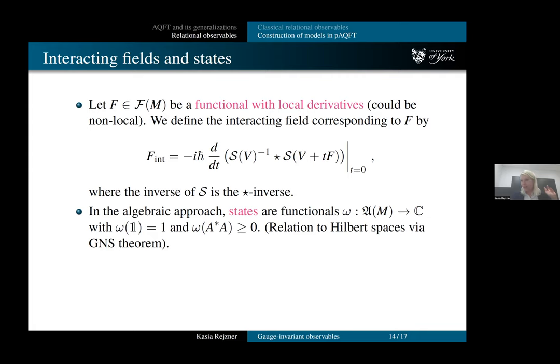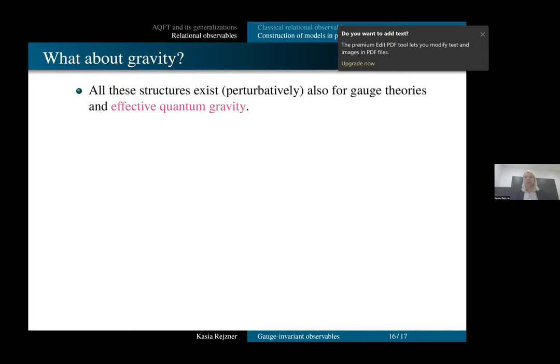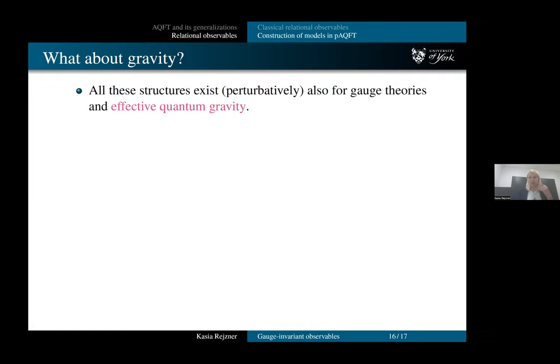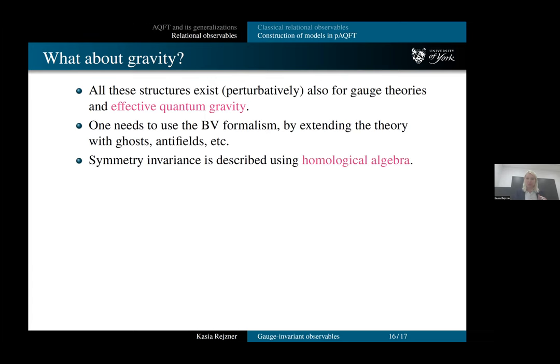So we have now our quantum algebra with the non-commutative product we introduce. And the state is a map from that to complex numbers. And then if we want to go to Hilbert spaces that everybody likes, we use the GNS theorem. So just to wrap up. So this is the whole sort of framework that works for scalar fields, gauge theories and effective quantum gravity. So for studying things like I introduced in the first part of the talk, effective quantum gravity you're after. There is a way to extend the theory using some version of BRST, which is called BV formalism so that you can quantize things nicely. And then you control symmetry invariance using homological algebra.